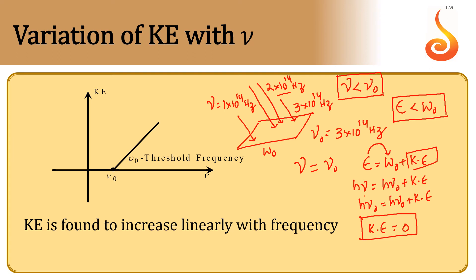But from here, let the frequency of light be 4×10¹⁴ Hz. This means the frequency of light is greater than the threshold frequency, which means the energy of light is greater than the work function. For example, if the energy of the light is x joules and the work function is y, and if x is greater than y, then x minus y — whatever energy is left — will be utilized as kinetic energy and given to the electron. So the electron will come out of the metal surface with that amount of kinetic energy. Once the frequency of light exceeds the threshold frequency, as the frequency increases, the kinetic energy of the electron also increases.